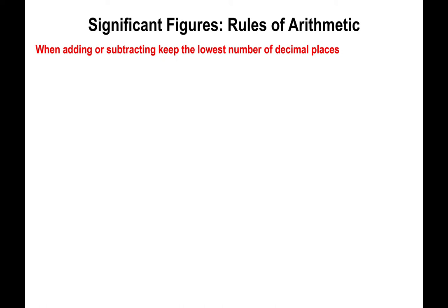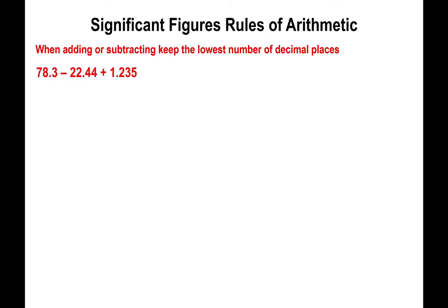Now let's look at what happens when adding and subtracting. Once again, one number may carry the greatest error and that determines the overall error of the final answer. When adding or subtracting, you look at the decimal places — specifically, you look for the number that has the least number of decimal places. The first number has one decimal place, the second has two, and the third has three.